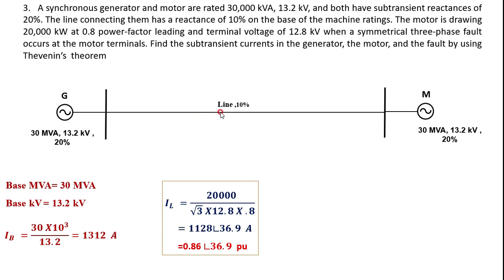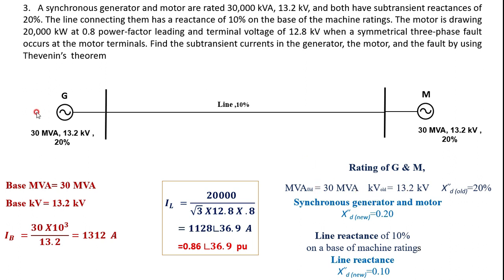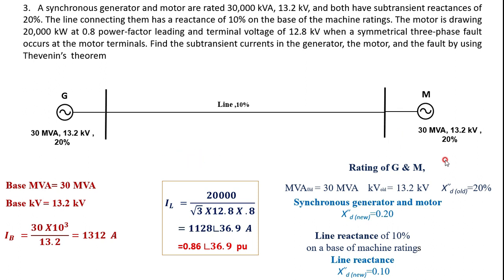The new per-unit reactance values for the generator, motor, and line remain the same as the old values. Therefore, the subtransient reactance for both the synchronous generator and motor is 0.20, and the line reactance remains 0.10. The fault is occurring at the motor terminals, and the terminal voltage of 12.8 kV is the pre-fault voltage for the system.